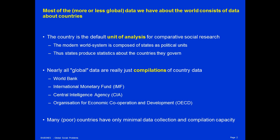Most of the more or less global data we have about the world consists of data about countries. The country is the default unit of analysis for comparative social research. This is because the modern world system is composed of states, and states produce statistics about the countries they govern. In fact, you can see the word state right there in the word statistics. Statistics were etymologically originally just data about countries, data that were produced by states.